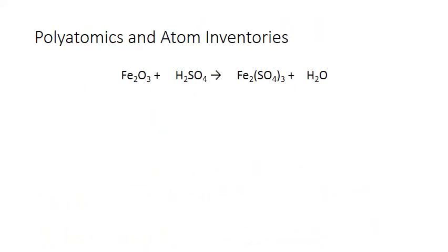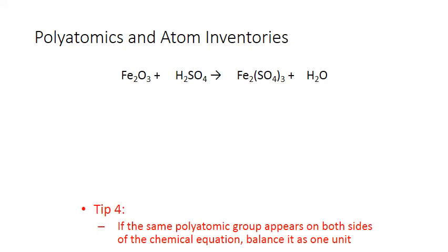Here's a more complicated chemical equation — it's complicated because we have more elements. Sometimes you have to write out all those different elements and balance them individually. In certain cases we can simplify our atom inventory. In particular, if you have polyatomic ions in your chemical reaction and they do not change from one side to the other — for example, SO₄ in this particular chemical equation, the sulfate polyatomic — it's SO₄ on both sides. So we're going to keep it as a group in our atom inventory and count the total number of SO₄ sulfate ions rather than the individual sulfur and oxygen atoms associated with it.